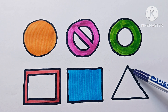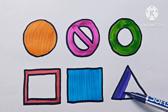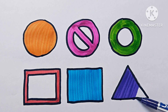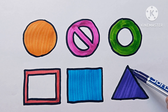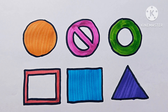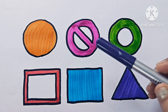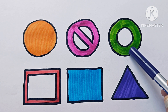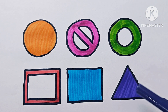Purple color — this is a triangle. Triangle is a 2D shape with three sides, three vertices, three angles. "Tri" means three. The shapes we learned: circle, not-allowed symbol, hollow circle, rectangular frame, rectangle, triangle.